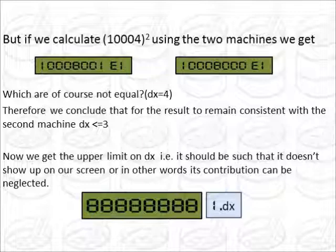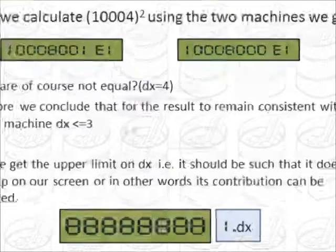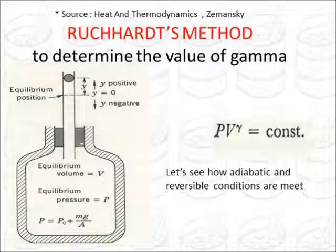Therefore we conclude that for the result to remain consistent with the second machine, dx should be less than or equal to 3. Now this is giving us a very subtle point, a point that the upper limit on dx should be such that it doesn't show up on our screen. Or in other words, it rhymes with the thermodynamic statement that its contribution can be neglected. So the contributions to our results can be neglected in this way.